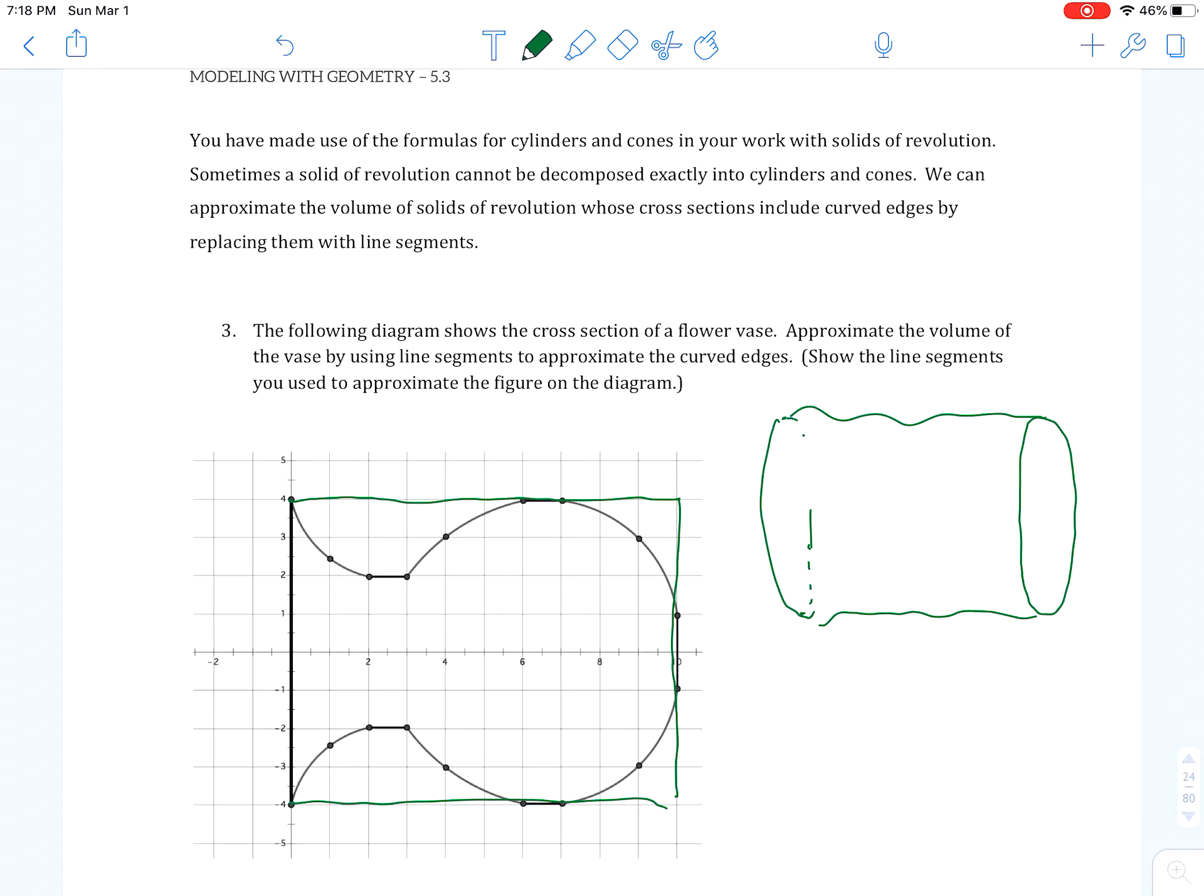So, if I were to get the volume of this, what would I do? Well, it would be the area of the base. So, I got, like, a radius of 4. And I'd multiply by the height. And I think that that's 10. Okay? And I'd plug the numbers in. And I'd be done. And I have a fair estimate of what the volume of this flower vase would be. But, again, it would be too large.